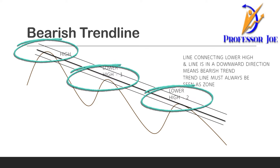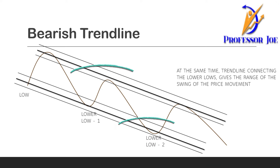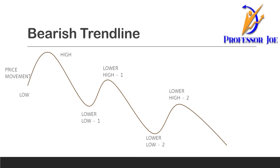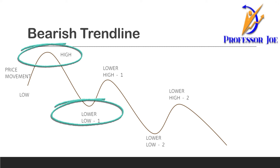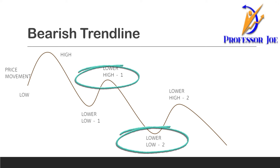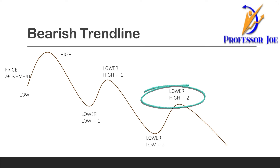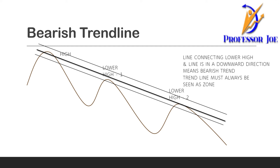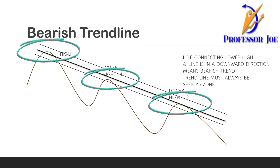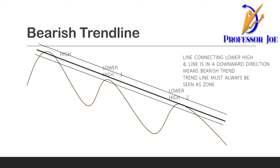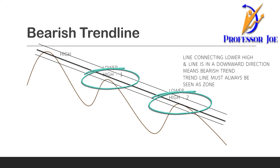In a bearish market, a trend line is drawn by connecting the lower highs. On the other side of the trend, a trend line is also drawn so that a zone can be created — so you know where to exit a trade. The price went high, came back to a lower low, then to a lower high, back to a lower low, and again to a lower high. Drawing a line connecting the high, the lower high, and the second lower high gives you the trend line. Always remember: just like support and resistance, a trend line is also a zone.